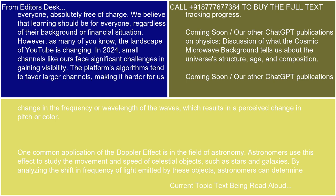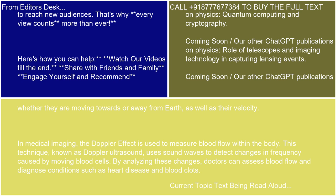One common application of the Doppler effect is in the field of astronomy. Astronomers use this effect to study the movement and speed of celestial objects, such as stars and galaxies. By analyzing the shift in frequency of light emitted by these objects, astronomers can determine whether they're moving towards or away from Earth, as well as their velocity.